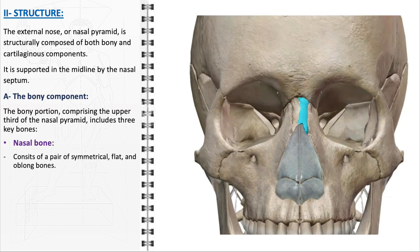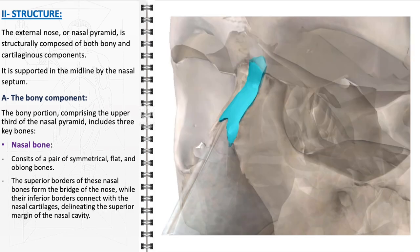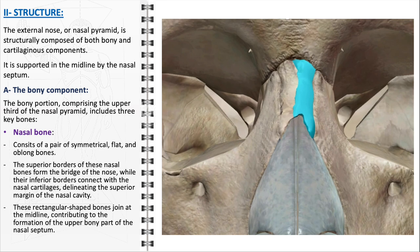The nasal bone consists of a pair of symmetrical, flat, and oblong bones, integral in forming the recognizable bridge of the nose, extending from the root down towards its middle section. The superior borders create this bridge, while the inferior borders connect with the nasal cartilages, delineating the superior margin of the nasal cavity and marking the transition from bone to cartilage. These rectangular-shaped bones are aligned at the midline, contributing to the formation of the upper bony part of the nasal septum, ensuring structural symmetry and stability.